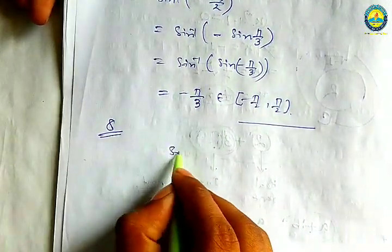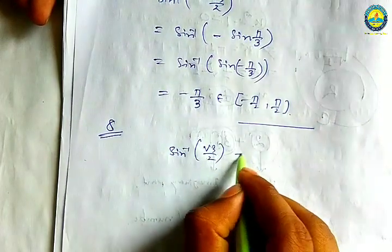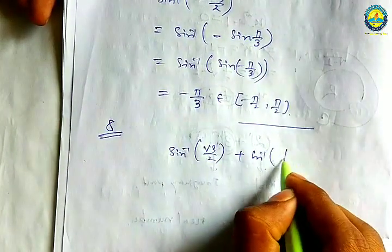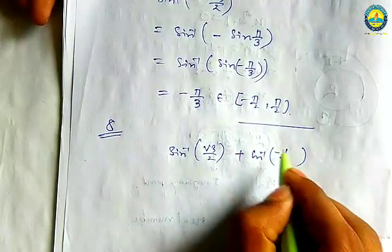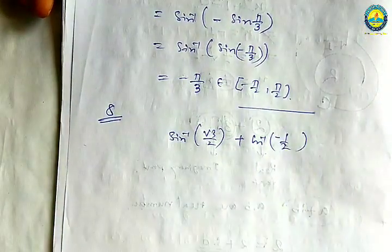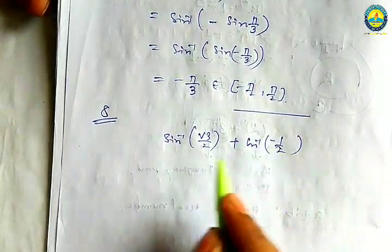Sin inverse(root 3 by 2) plus cos inverse(1/2) — how does the first part work? Sin inverse(root 3 by 2).